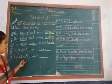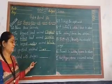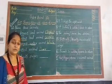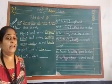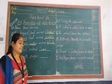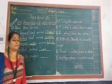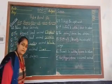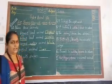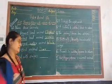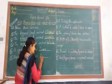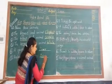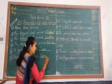Number five: animals having strips. As we know, there are two animals that have strips on their body. They are zebra and tiger. We write zebra, Z-E-B-R-A.